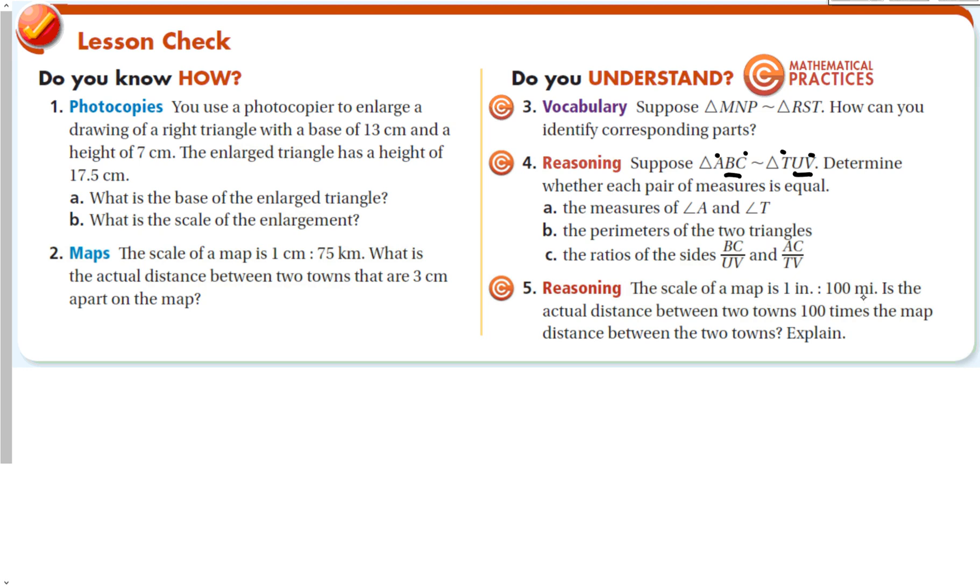Finally, the ratio of the scale of a map is 1 to 100. Is the actual distance between two towns 100 times the map distance between the two towns? No. It is greater than 100 times since 100 miles is more than 100 times as great as one inch. One inch to 100 miles is much more. So just be careful with the units when you're talking about scale. And that is 2.8 proportions and similar figures.